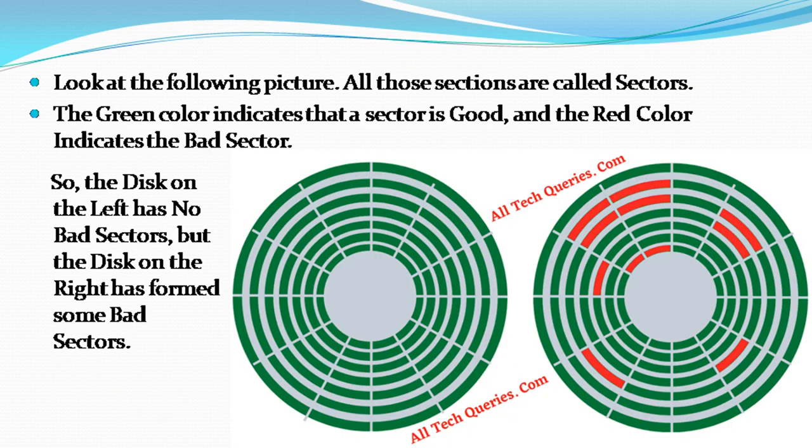Look at the picture. All those sections are called sectors. The green color indicates that a sector is good and the red color indicates the bad sector. So the disk on the left has no bad sectors, but the disk on the right has formed some bad sectors.